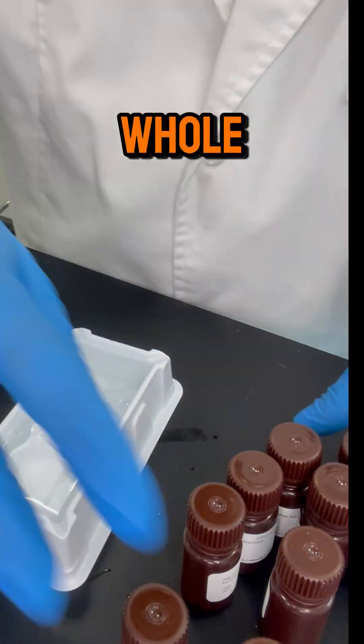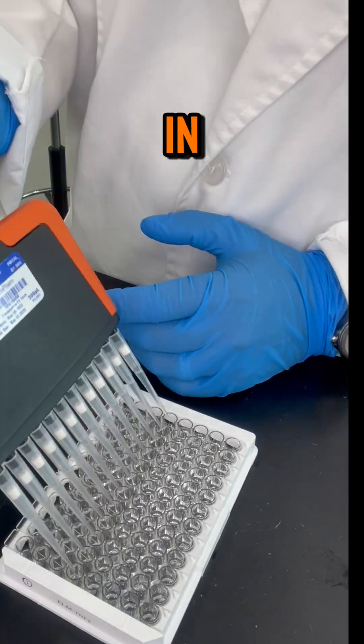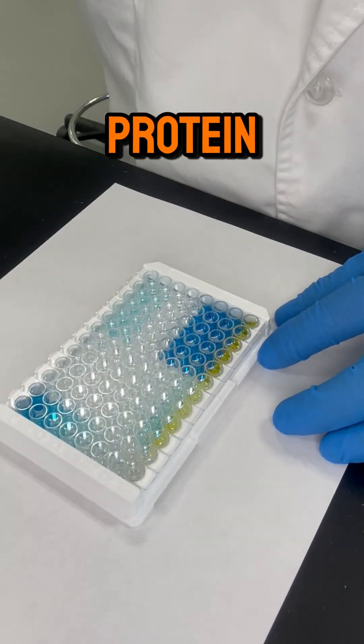Next, we add in a molecule that reacts to the whole mess of things in our wells. We let them get cozy in the dark, and our wells turn a fancy blue color if the original protein is there.